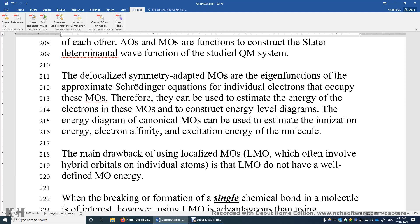So it's possible to make MO energy diagram of this symmetry-adopted delocalized MOs. They're also called canonical MOs. We can use these MOs to estimate the ionization energy, electron affinity, and excitation energy of the molecule.